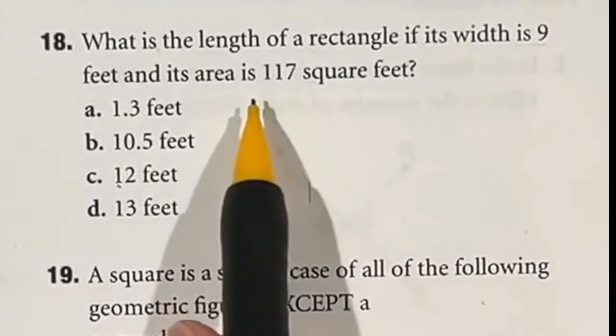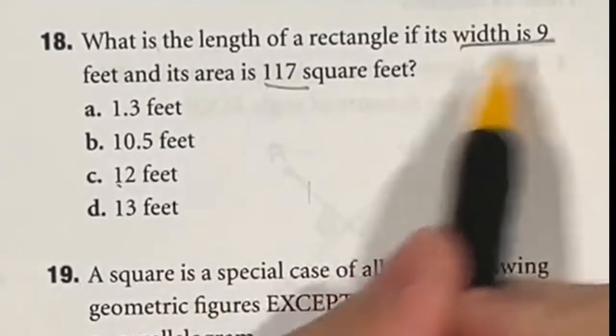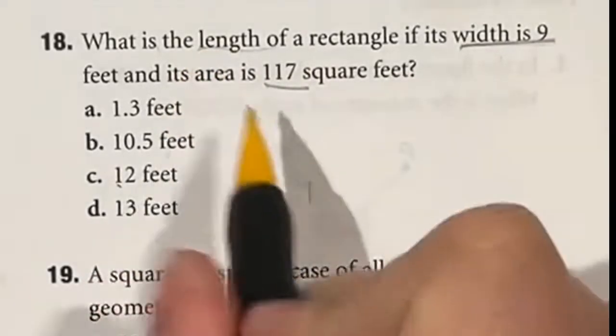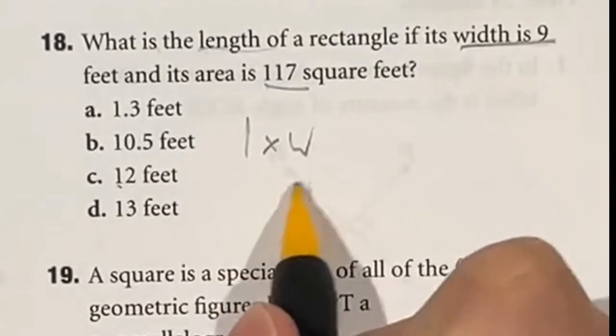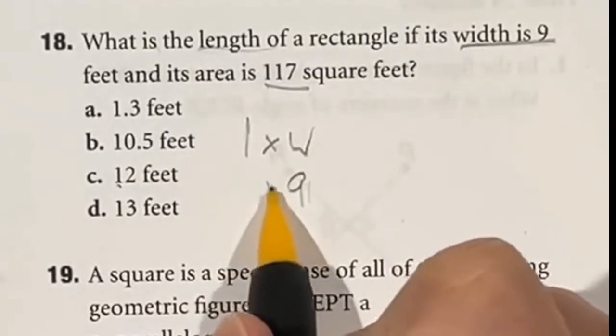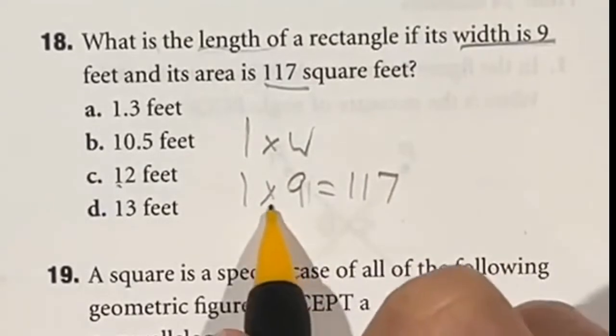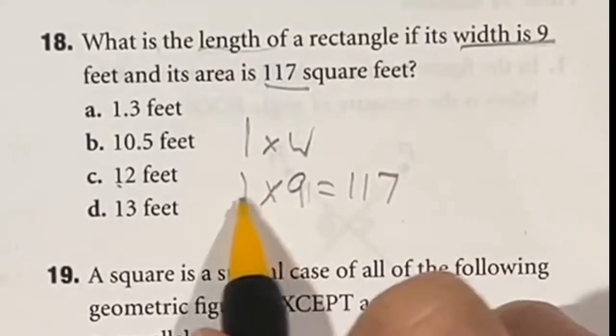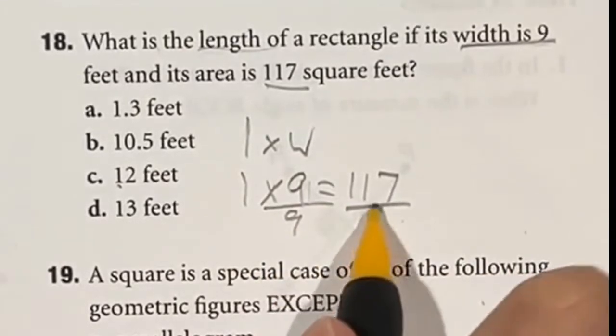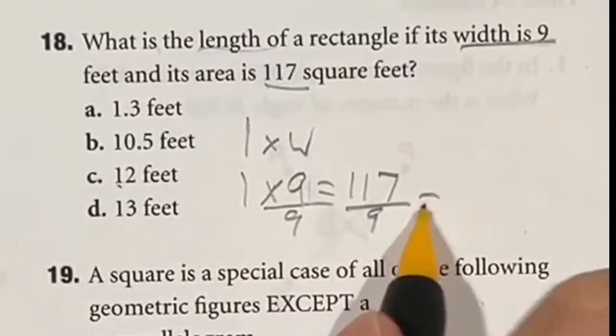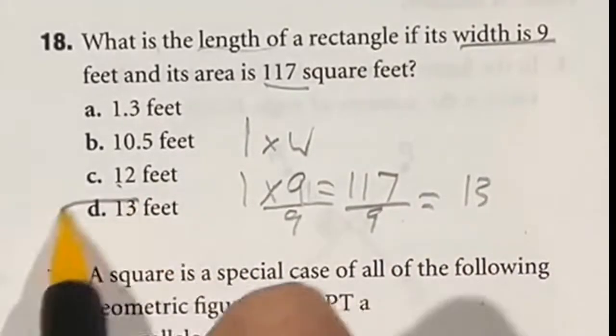Number 18 tells us that the area of a rectangle is 117 square feet. It gives us the width of nine, but we have to find the length. Don't forget a rectangle is just length times width, so if we know that the width is nine and when we multiply these together it's going to give us 117, we just have to do the opposite of multiplying here to find what l is equal to. I'm going to divide both sides by nine because that's the opposite, and 117 divided by nine is equal to 13. So our length is going to be 13 feet.